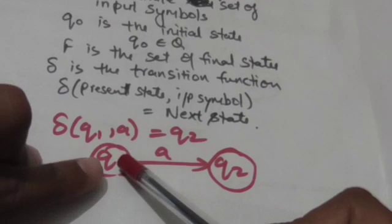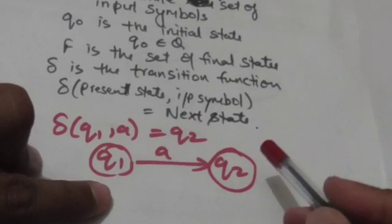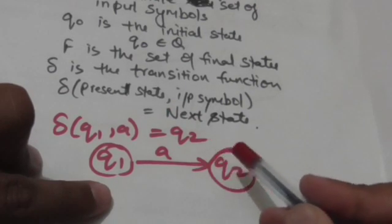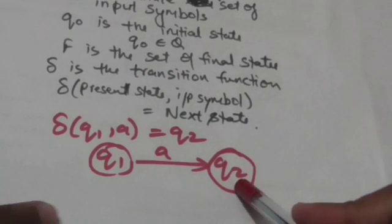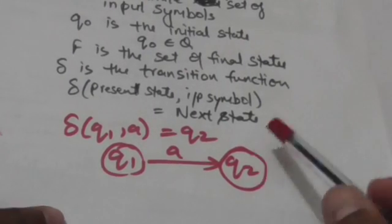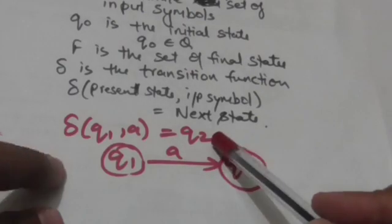Q1 and it reads input A, it jumps to state Q2. Then this transition can be expressed by transition function as